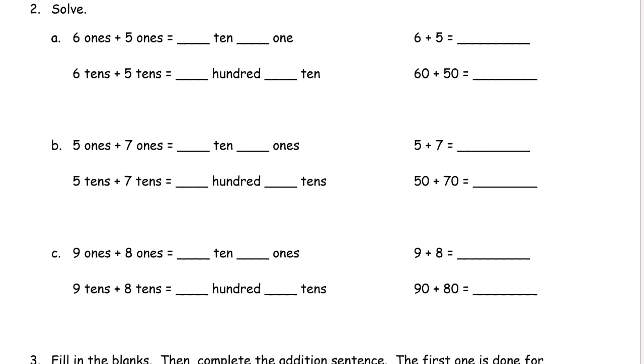Six ones plus five ones is a ten and a one, because that's eleven. And six tens and five tens, that's a hundred ten, so it's a hundred and one ten.